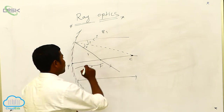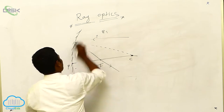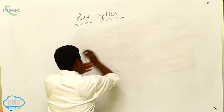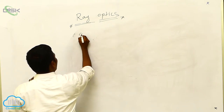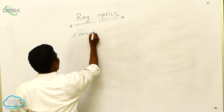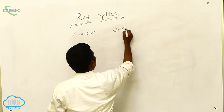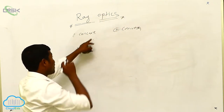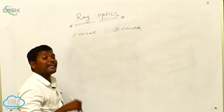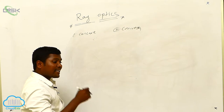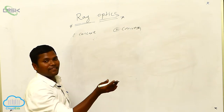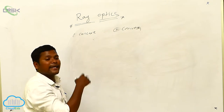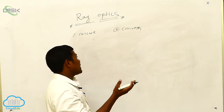There are two types: the first is concave and the second is convex. A concave mirror is a convergent mirror, and a convex mirror is a divergent mirror. We already discussed how to draw ray diagrams for the concave mirror, and similarly we can draw them for the convex mirror.